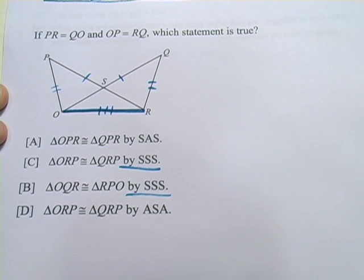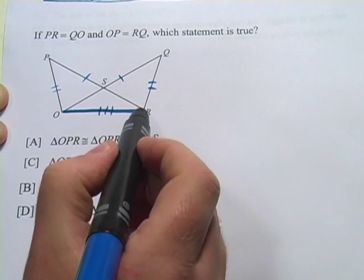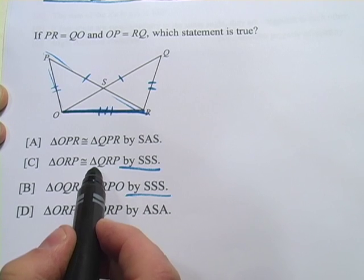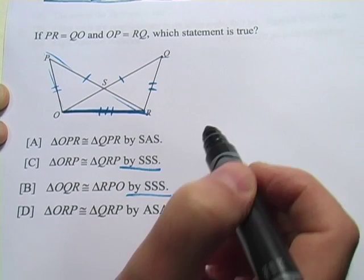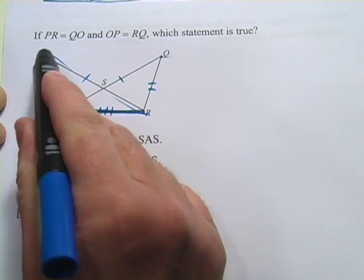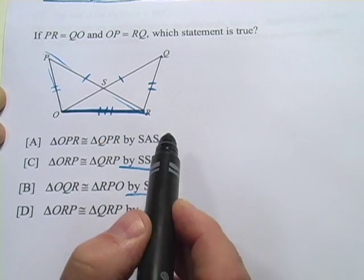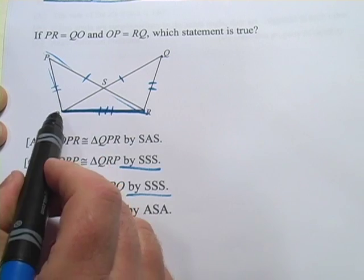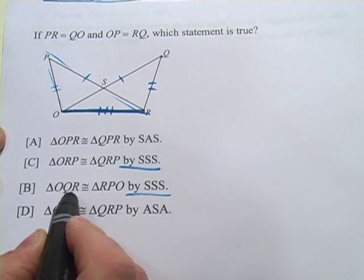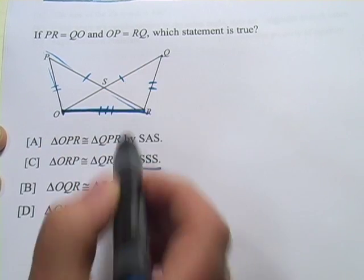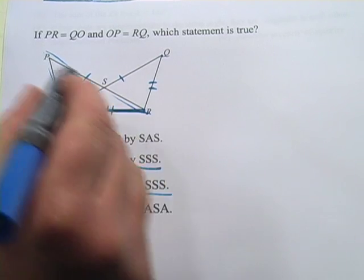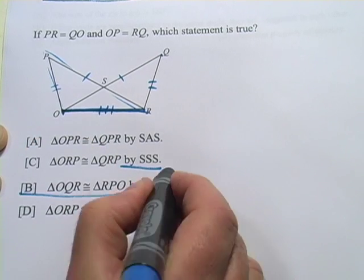Which one is correct? We want the points to correspond. The first option says ORP — starting here and going up here. The second says QRP, starting up here. That's not going to be right because point O on this triangle doesn't correspond to point Q; it's P that corresponds to Q, and O corresponds to R. Looking at the next option, OQR — starting at O, going up to Q, down to R — and RPO. That looks correct. So B is going to be our correct answer.